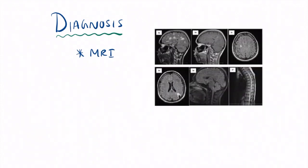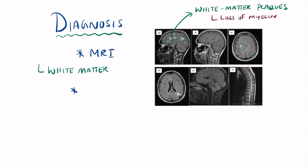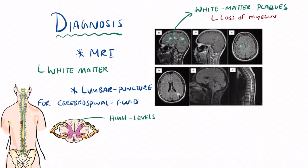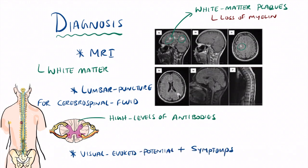For diagnosis, the number one gold standard is MRI. You will see white matter plaques on MRI scans due to the loss of myelin. A lumbar puncture for cerebrospinal fluid can also be performed, from which high levels of antibodies may be found. Visual evoked potential and symptom description can also be used, but the gold standard remains MRI.